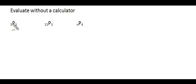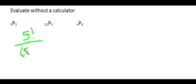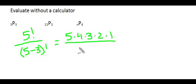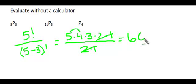We want to evaluate the permutation of 5 objects taken 3 at a time. We have 5 factorial divided by the number of objects minus the number of slots factorial. So this is 5 factorial — 5 times 4 times 3 times 2 times 1 — divided by 2 factorial. The 2 factorials cancel, so we have 5 times 4 times 3, which is 60. There are 60 permutations of 5 objects taken 3 at a time.